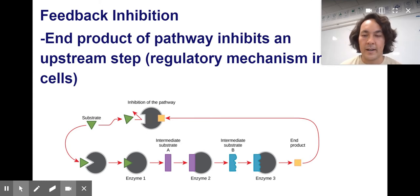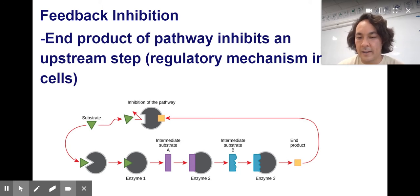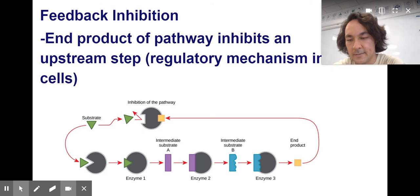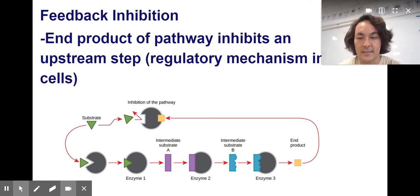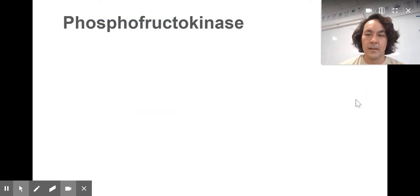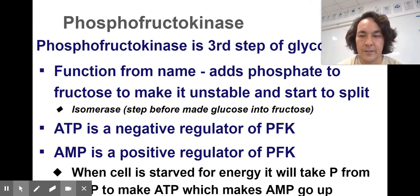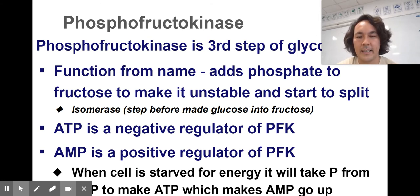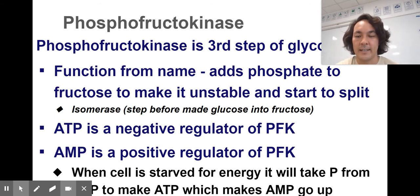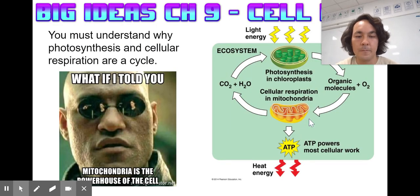Feedback inhibition: the end product of a pathway inhibits an upstream step. Here you can see the end product — the orange square — going back to inhibit the beginning of the pathway where the substrate binds with the enzyme, so the triangle substrate can no longer get in. Once there's enough end product, the pathway stops. A good example is phosphofructokinase, the third step of glycolysis, which has 10 different enzyme-mediated reactions. ATP and AMP are regulators: ATP says we have enough energy in the cell — stop; AMP says please proceed because we need more energy.